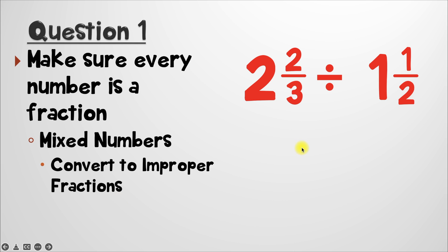If you forgot how to do that, don't freak out. I'll make sure I post a link in the description below on a full lesson on how to convert from mixed numbers to improper fractions. But in case you forgot, here's the step-by-step process. Let's focus on two and two-thirds right now. The first thing we have to do is take our denominator and multiply it by our whole number. That's three times two, and that gives us six.